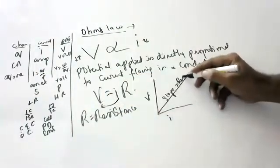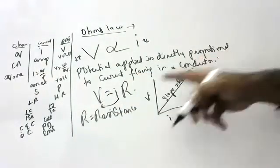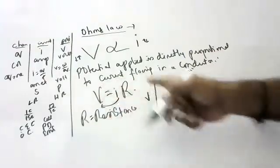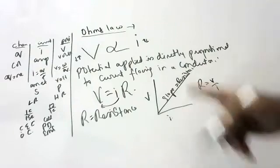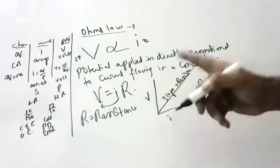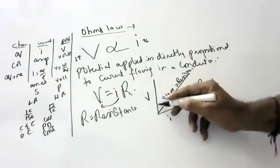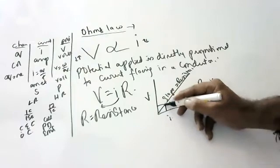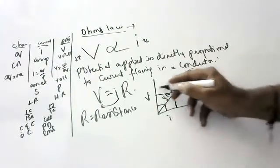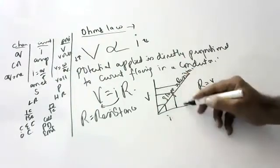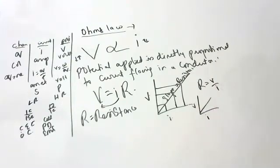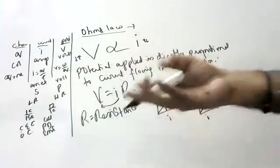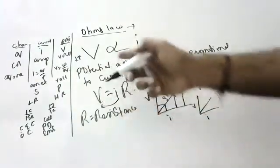The slope of the V-I graph gives resistance because R = V/I. Since potential and current are directly proportional — as potential increases, current increases — the graph is a straight line through the origin. A famous exam question on Ohm's Law asks you to state the law and mention the formula.